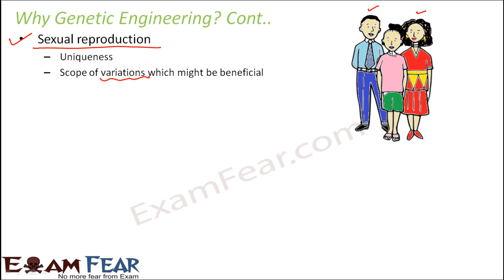Another example is the long neck of the giraffe. Earlier, giraffes never had such a long neck. But due to variations, some giraffes started having a long neck, and it turned out to be beneficial to the animal. That is how these variations started becoming more and more common. So in sexual reproduction, each organism has its own identity and no two organisms are going to be exactly identical.